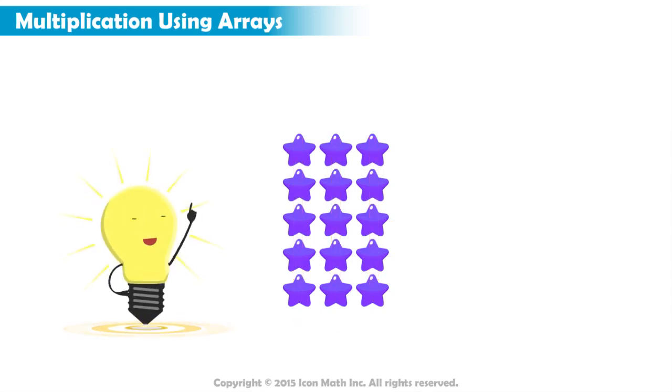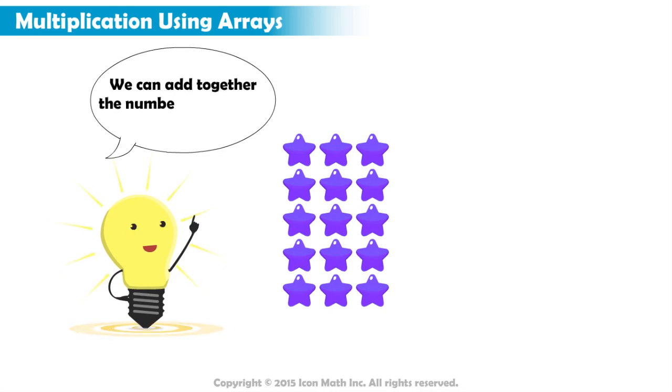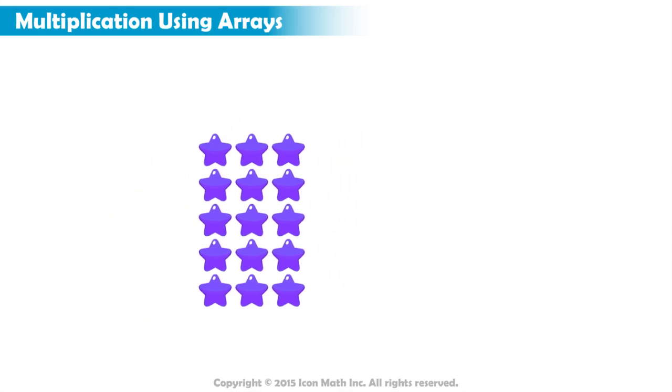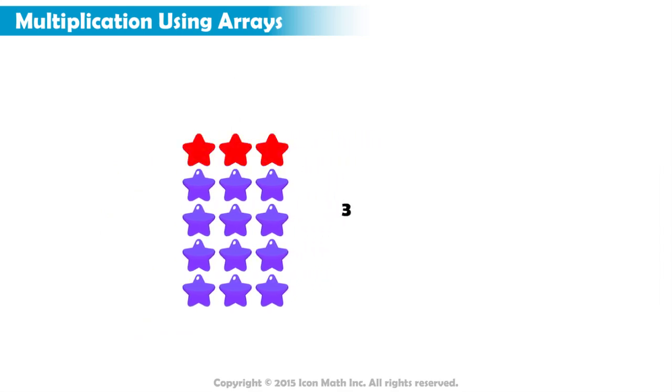To find the number of objects in the array, we can add together the number of objects in each row. There are three objects plus three equals six, plus three equals nine, plus three equals twelve, plus three equals fifteen. So, we have fifteen objects.